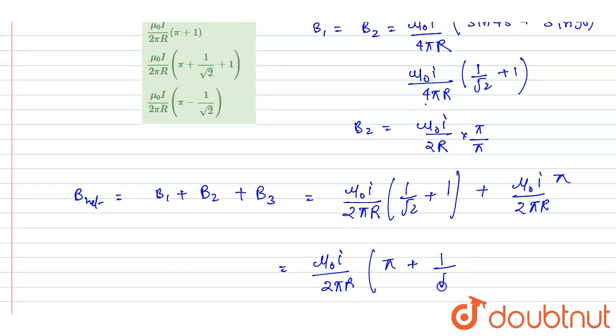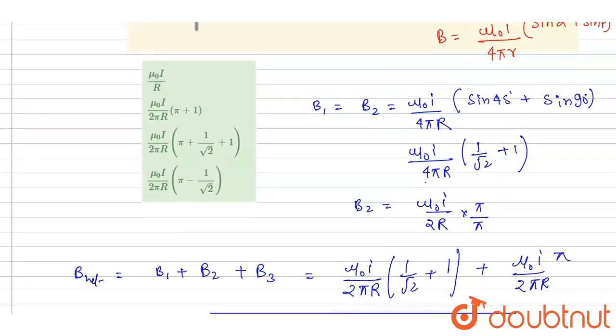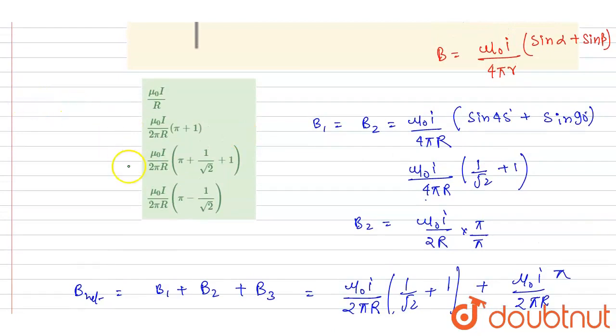Pi plus 1 by root 2 plus 1. So this will be the net magnetic field and answer of this question. Now you can check for the option. So see, here is the correct option. Thank you.